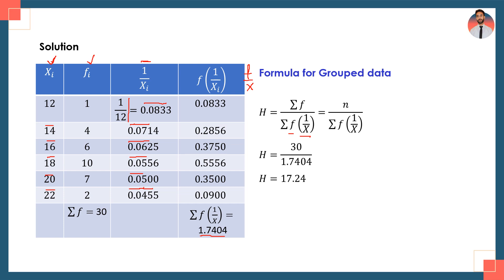The sum of frequencies, summation f = 30, which is also equal to n, the total number of observations. Applying the formula: harmonic mean = summation f divided by summation (f/x) = 30 divided by 1.7404, and the answer is 17.24. This is the harmonic mean for grouped data.